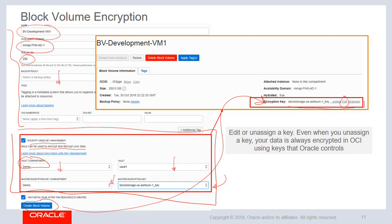You can edit or unassign a key. Even when you unassign a key, your data is always encrypted in OCI because we always do server-side encryption for both block volume and object storage buckets using a server-side encryption key which Oracle controls. So even if you unassign it, it doesn't mean that your data becomes unencrypted.